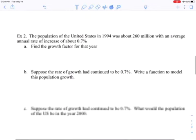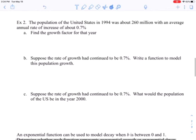Let's take a look at another example right here. The population of the United States in 1994 was 260 million, with an average annual increase of about 0.77%. So 0.7% in decimals equals 0.007.